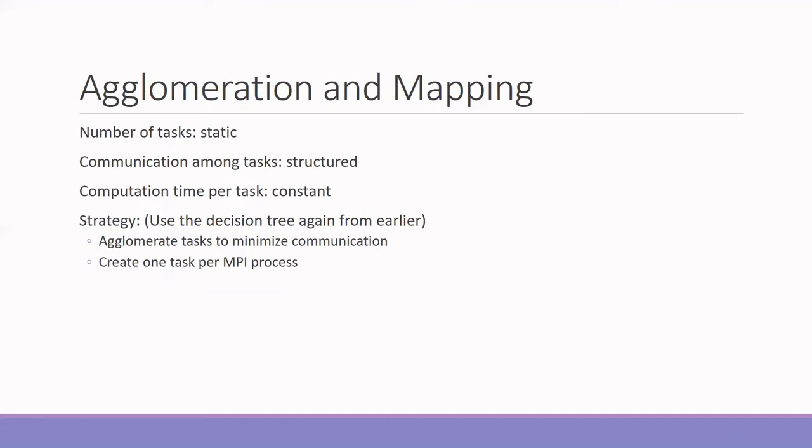Now, the third step, agglomeration and mapping. You can see that the number of tasks is definitely static because we have the predetermined number of weights. Communication among the task is always structured and the computational time is also constant. So definitely the strategy would be agglomerate the task to minimize the communication and map one task per one MPI process.